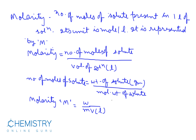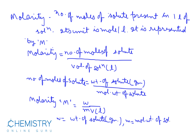In the formula M = W/(mV): W is the weight of solute in grams, m is the molecular weight of solute, and V is the volume in litres.